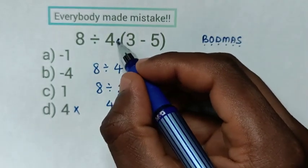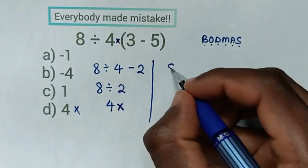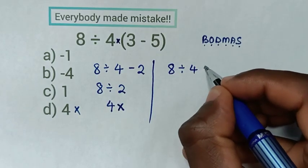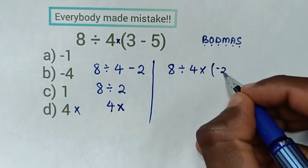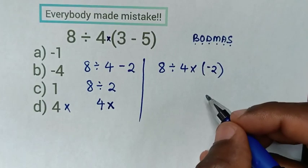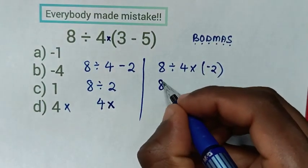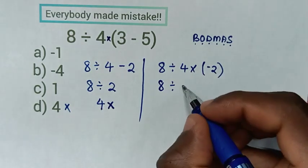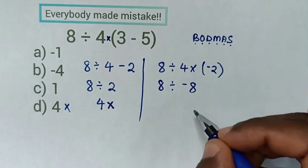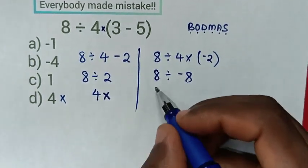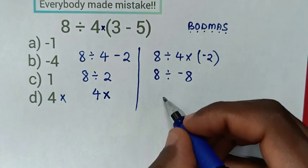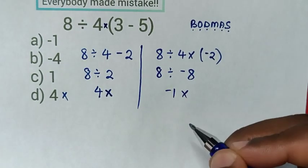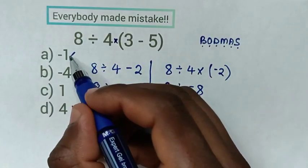Another mistake: 3 minus 5 is negative 2, and there's a multiplication here. So it becomes 8 divided by 4, times bracket negative 2. Then 4 times negative 2 is negative 8, and 8 divided by negative 8 is negative 1. This is also not correct — if you select A, that is wrong.